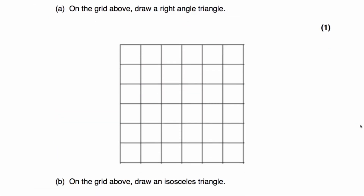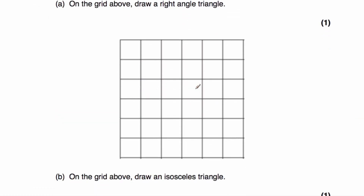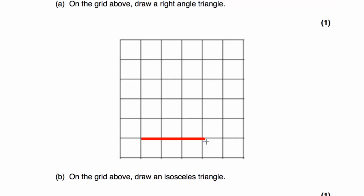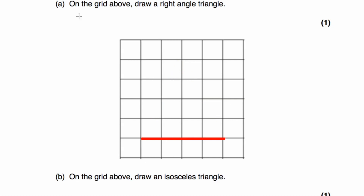Part B says: on the grid, draw an isosceles triangle — a triangle with two angles of the same size and two sides of the same length. I'll draw a base that is four squares across. The top of the triangle will be directly above the middle of that base. Joining that top point to each end of the base gives an isosceles triangle because the left-hand side and right-hand side are the same length. The top point could be anywhere above the midpoint of the base.